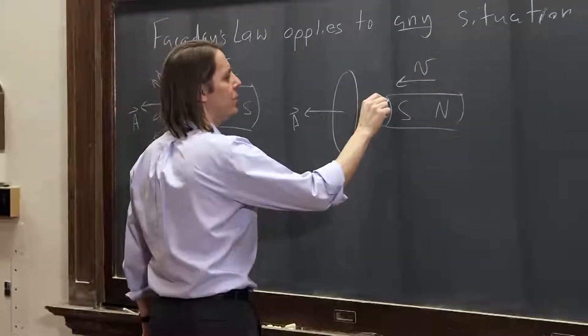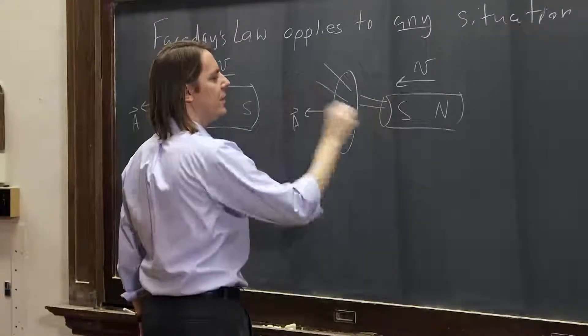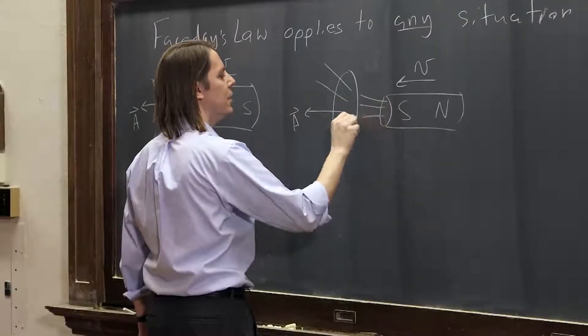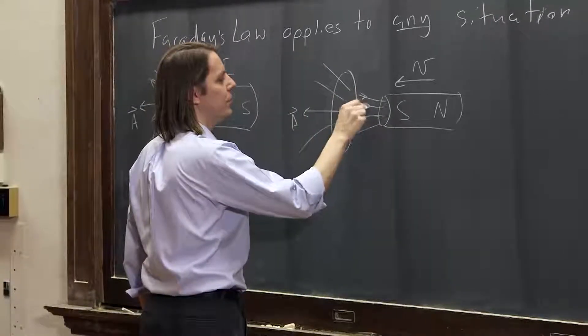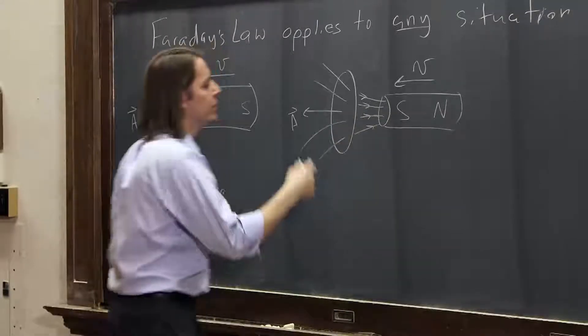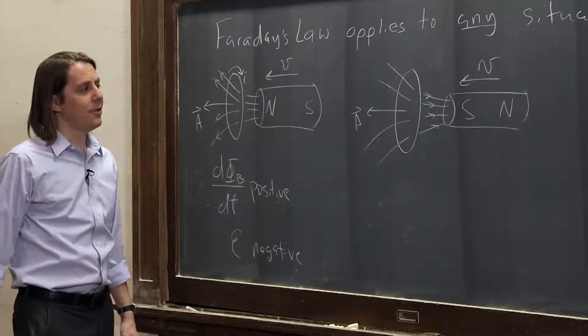Well now, the field lines will look kind of the same, kind of like that. Except now they're pointing in, right? The field goes from south to north. But we have the area vector going the same way, so now the flux is negative.